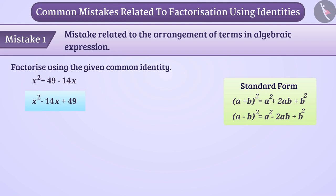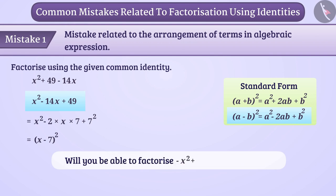Now we can factorize this with the help of this identity. Thus, we get the result as x minus 7 whole square. Now will you be able to factorize minus x square plus 25? Try it by yourself.